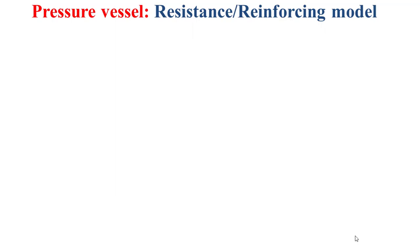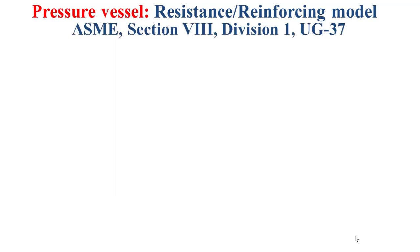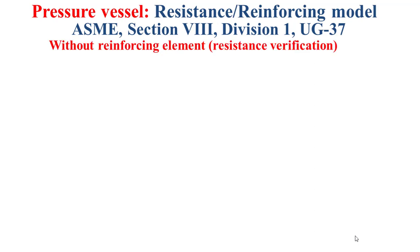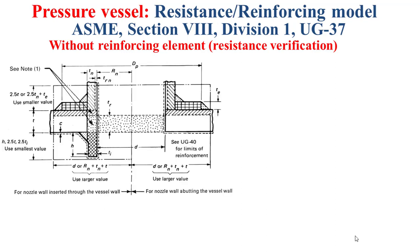I'll try now to explain the resistance reinforcing model. Based on the ASME Section 8 Division 1 UG-37, we have two situations. The first situation is where there is no reinforcing element. In this situation, we will just verify the resistance of the opening.